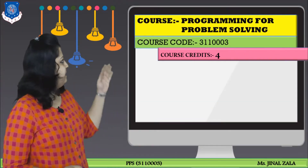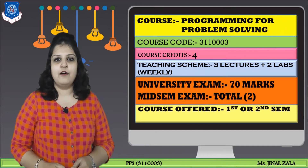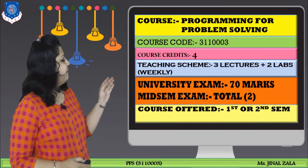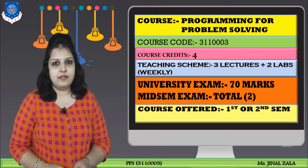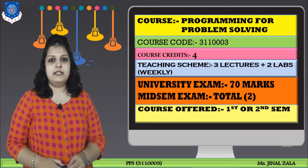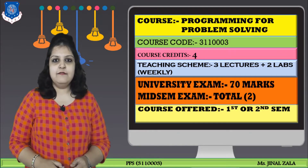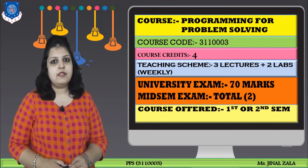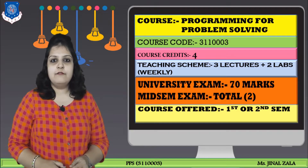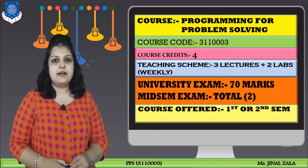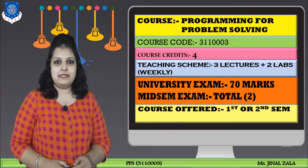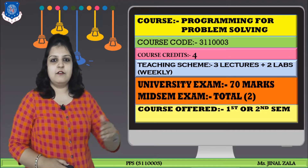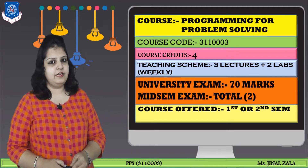You already know our subject name: Programming for Problem Solving. The course code is 311-0003 in Gujarat Technological University, and the subject credit is 4. The teaching scheme is, on a weekly basis, 3 lectures and 2 hours of lab sessions. In one semester, you have to give one university exam of 70 marks and two mid-semester or internal exams. This subject is offered in the first or second semester in various engineering fields.